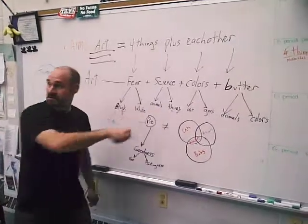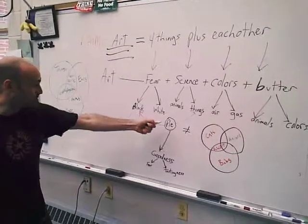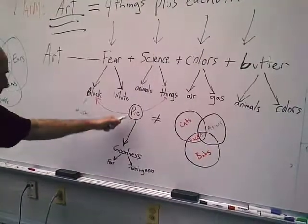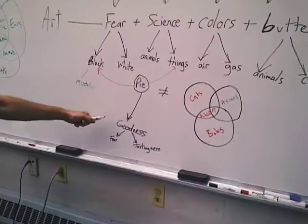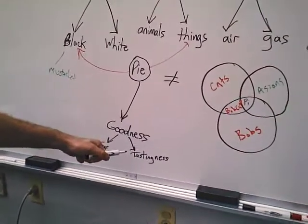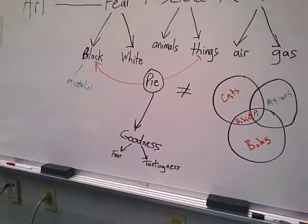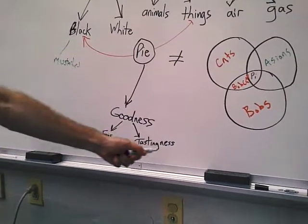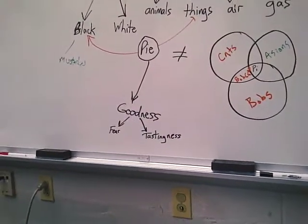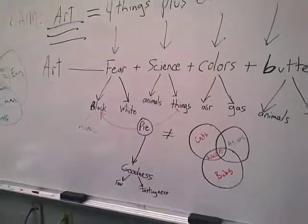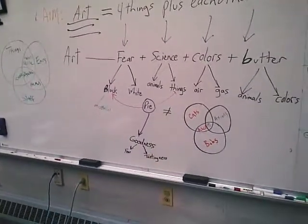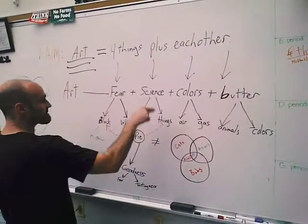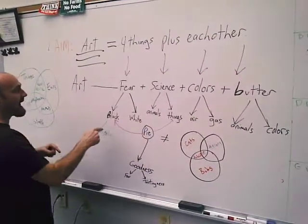Between black and things is pie, which is also goodness, which itself is made of fear and tastiness.